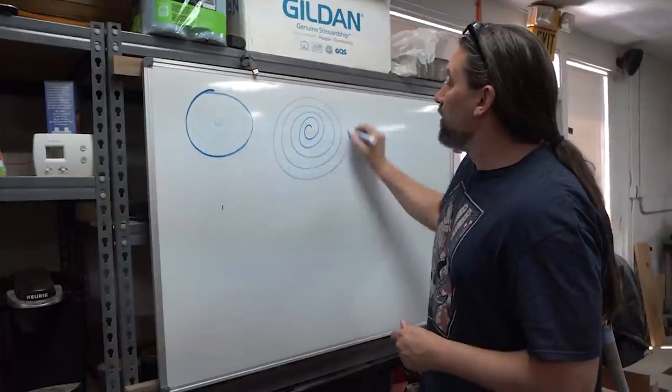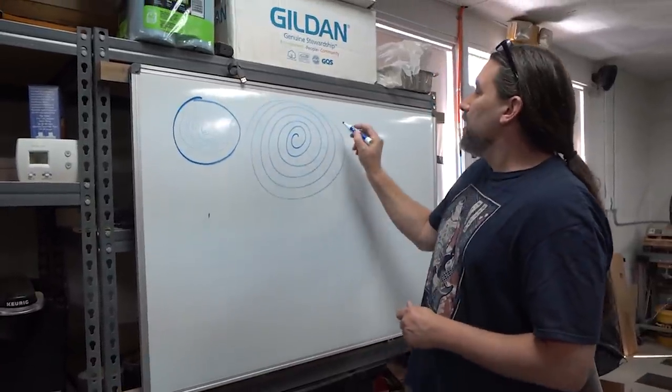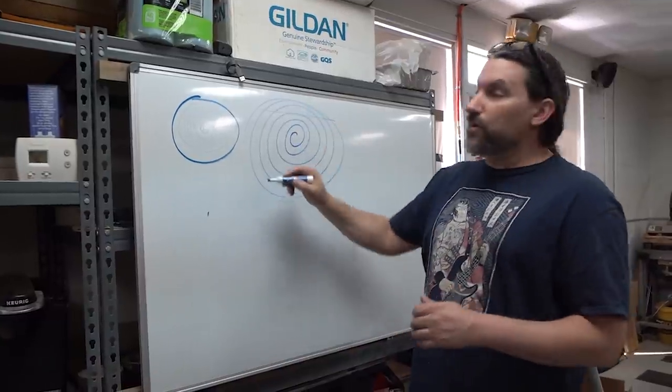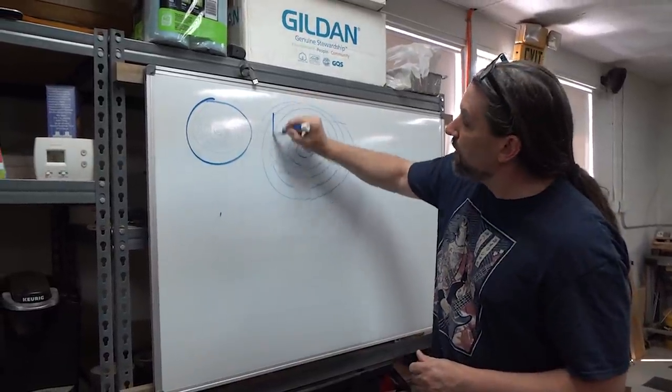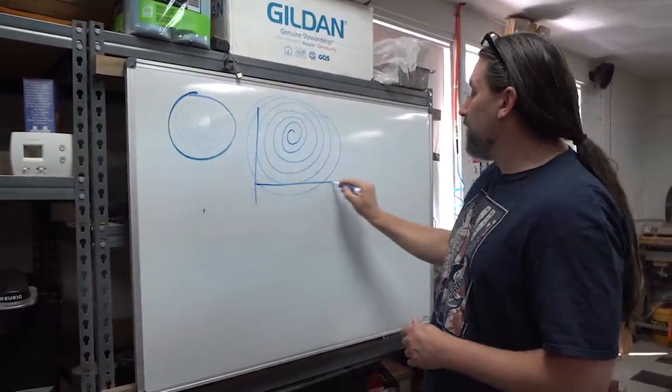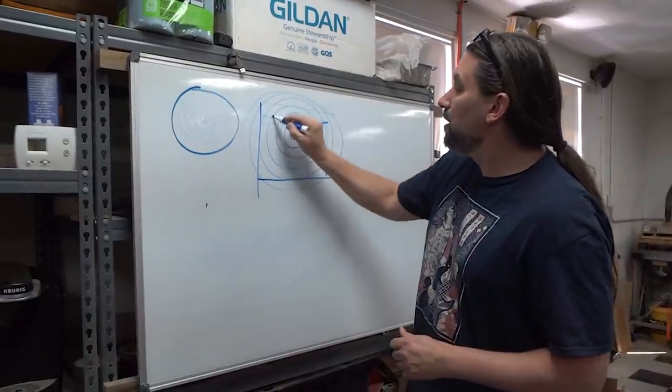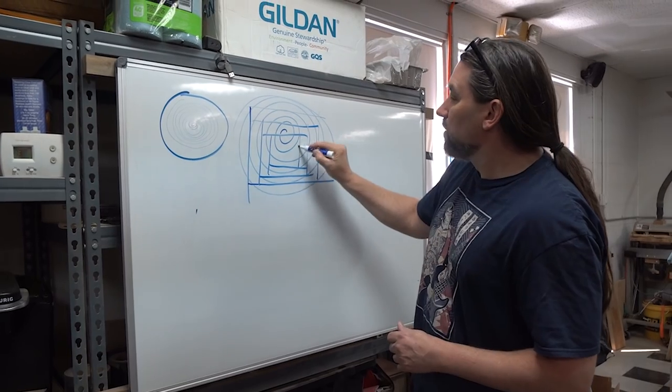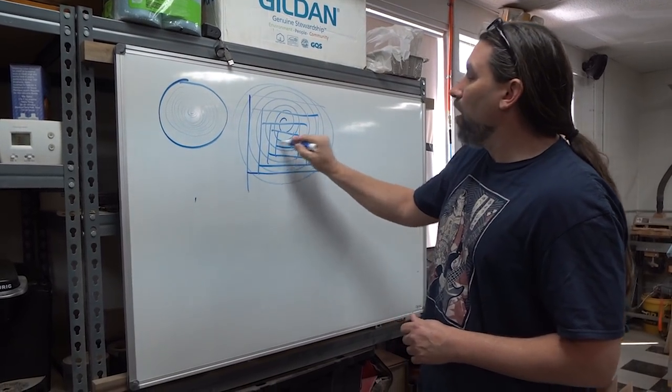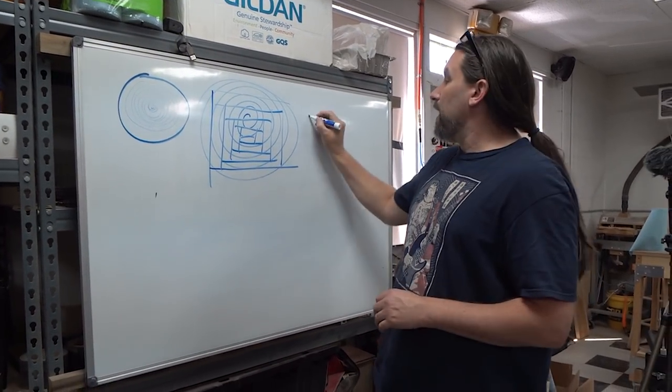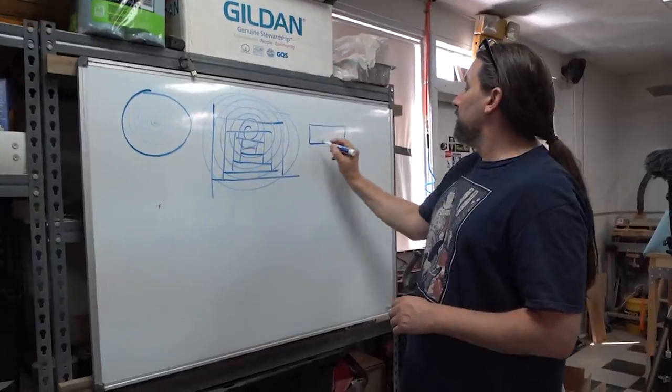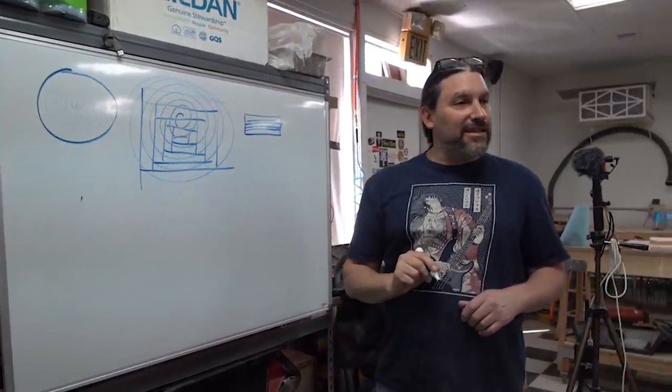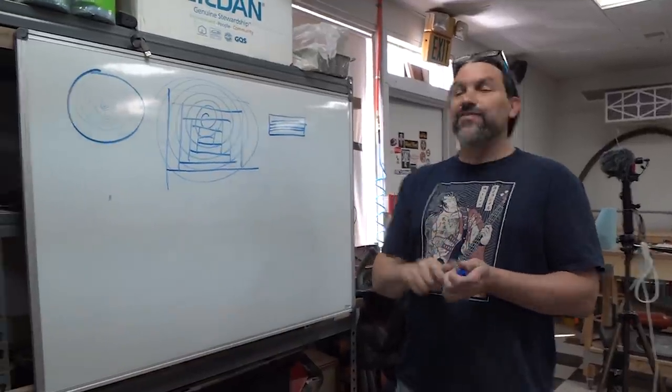Now flat sawn is they take a chunk right through there and it's flat. And then they flip the board 90 degrees and they take a chunk through there and it's flat. And they keep going like this. So all the boards have grain and grain that looks like that. Okay? That's flat sawn.